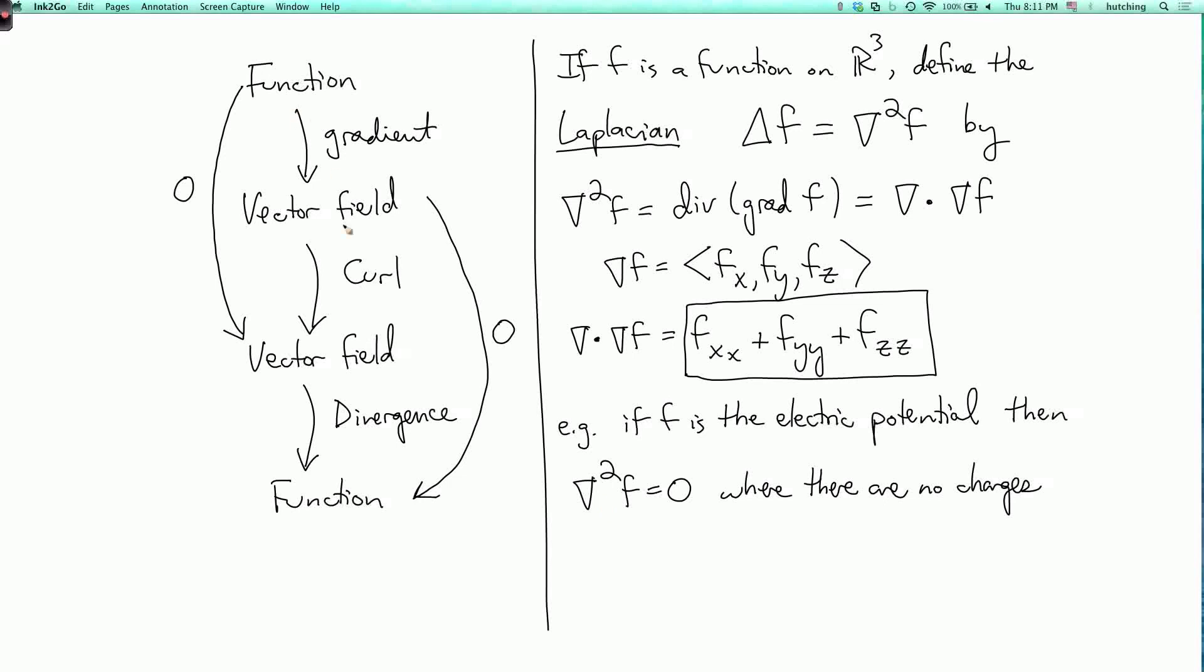So that's the basic chart. If you do two of these arrows in succession, you get zero. But if you do the first arrow followed by the third arrow, that's not necessarily zero. It's an interesting operator called the Laplacian.